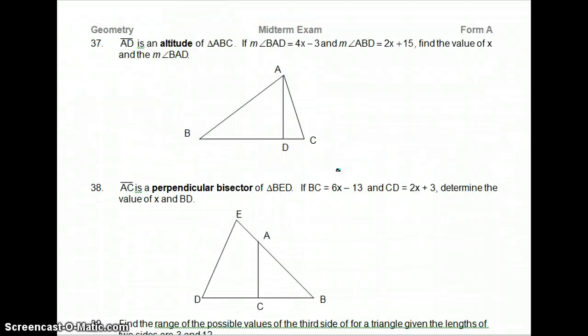37. AD is an altitude of ABC. BAD is 4X minus 3. ABD is 2X plus 15. Find the value of X and the measure angle BAD. Okay. So AD is an altitude. That means this is the right angle down here.